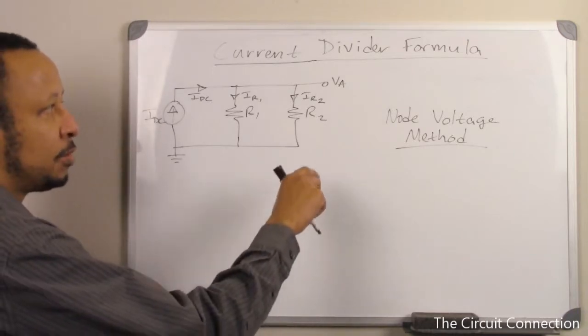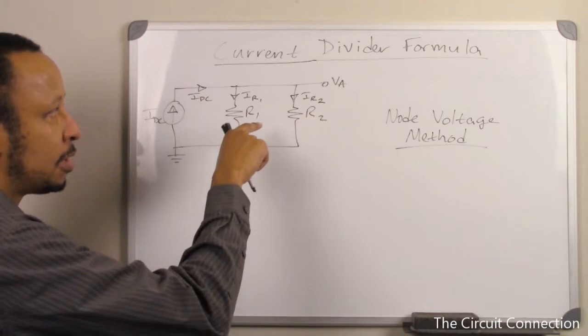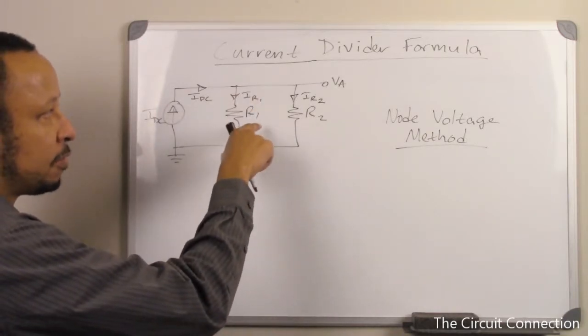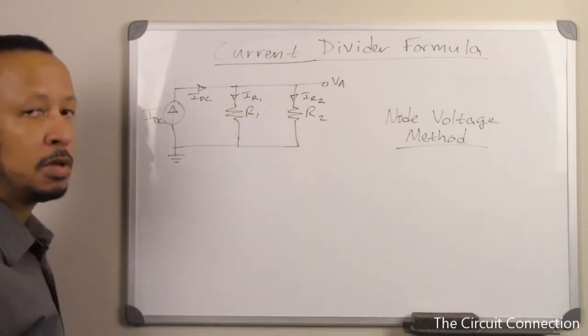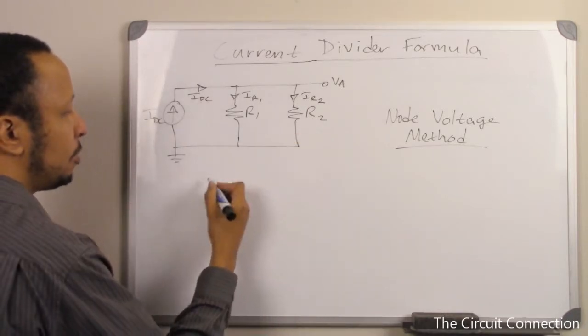What I've also used here is the fact that since this is a parallel circuit, whatever voltage develops over R1 will be equivalent to the voltage that develops over R2.